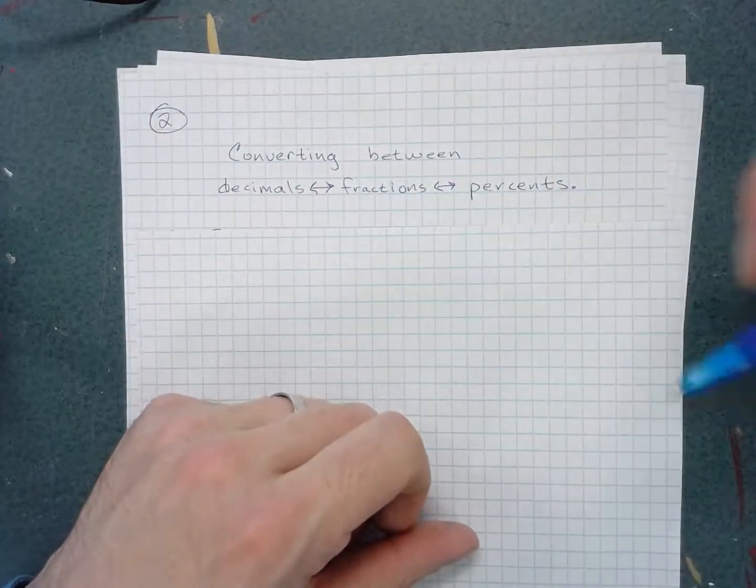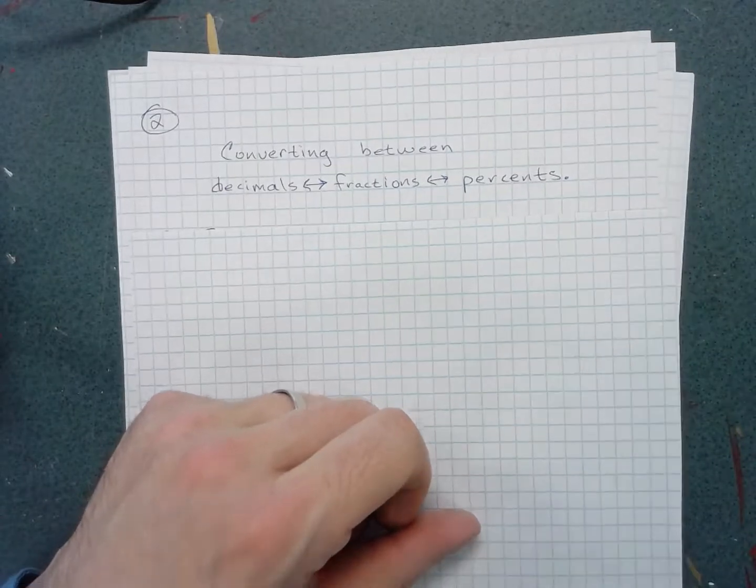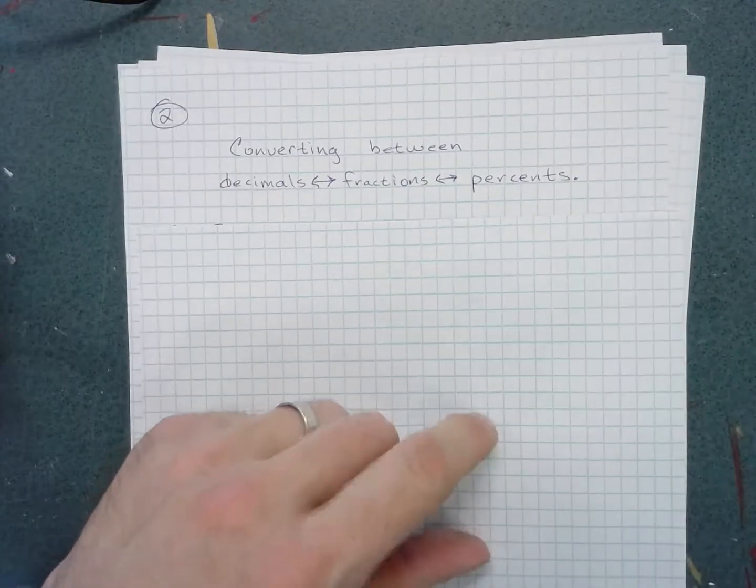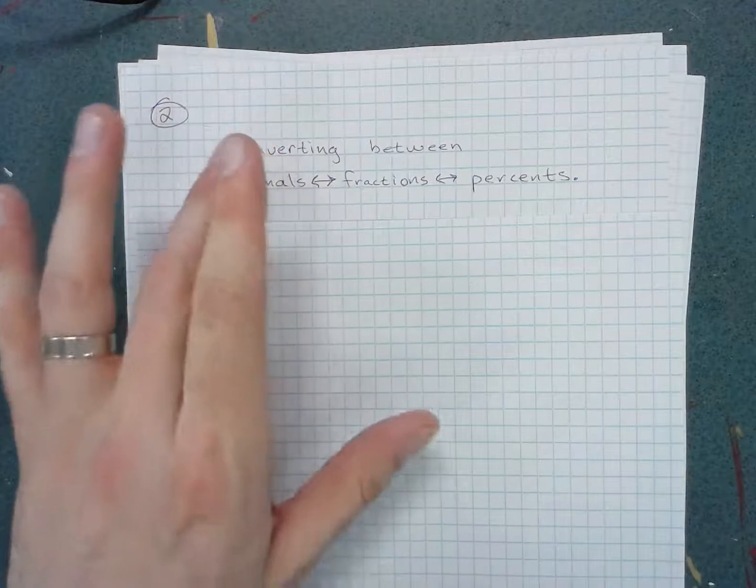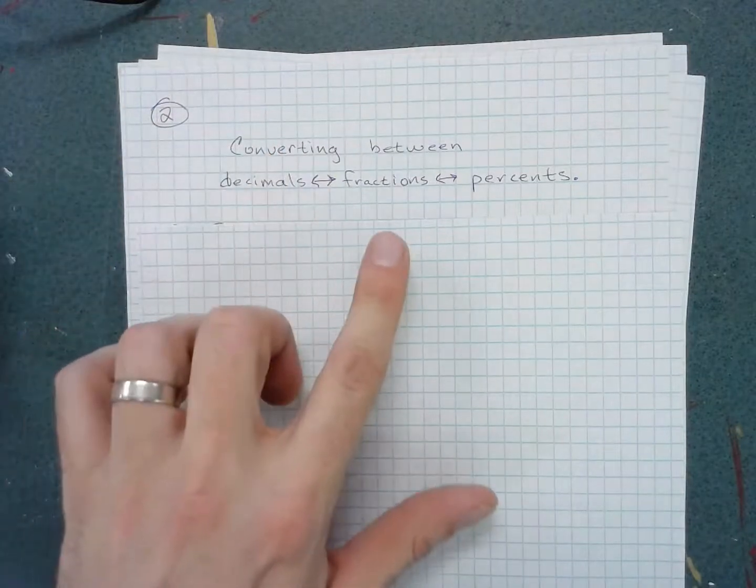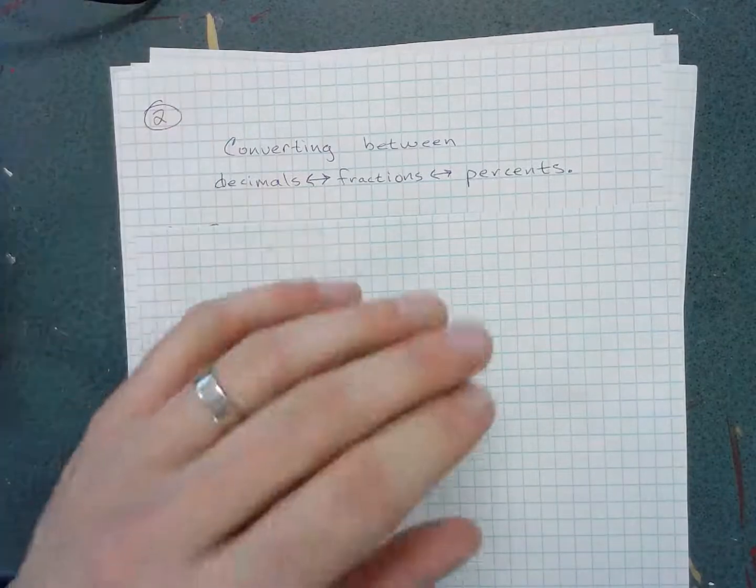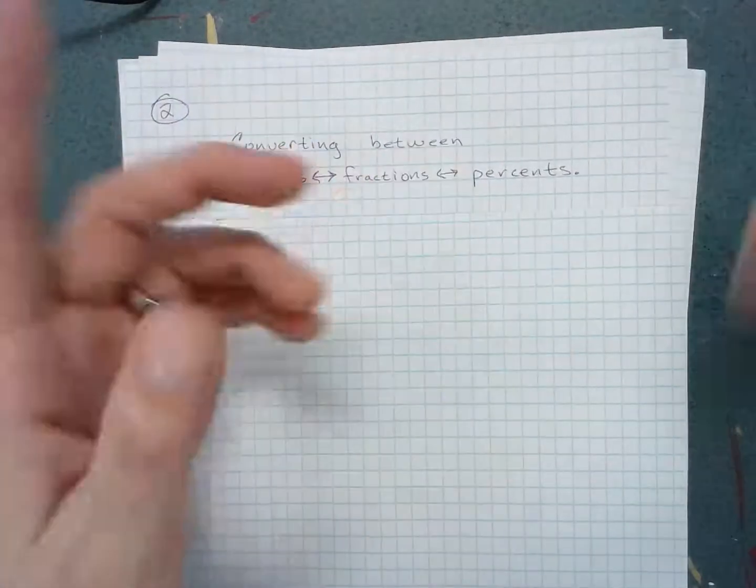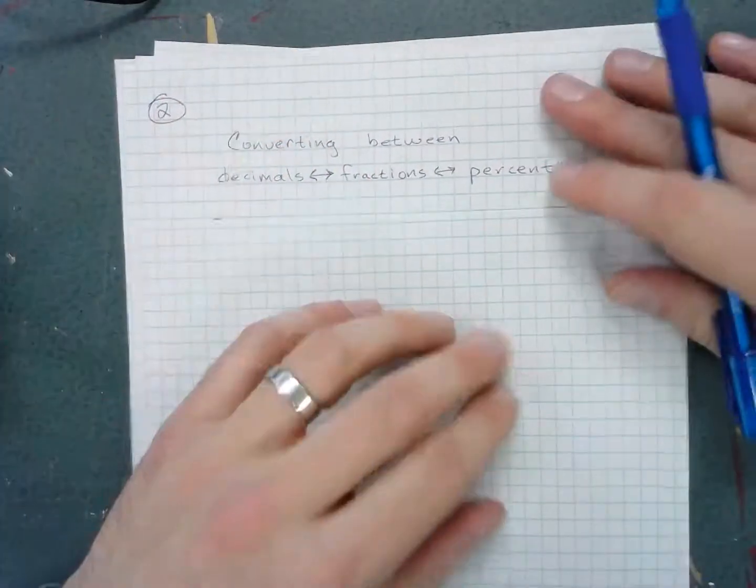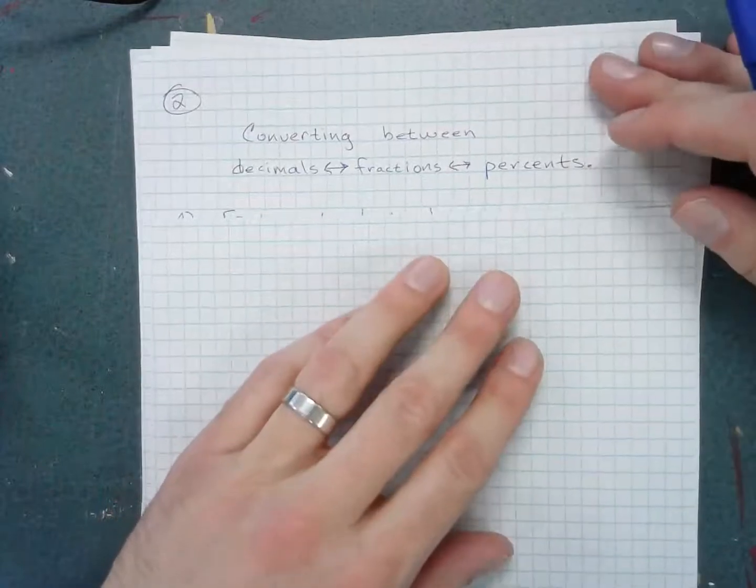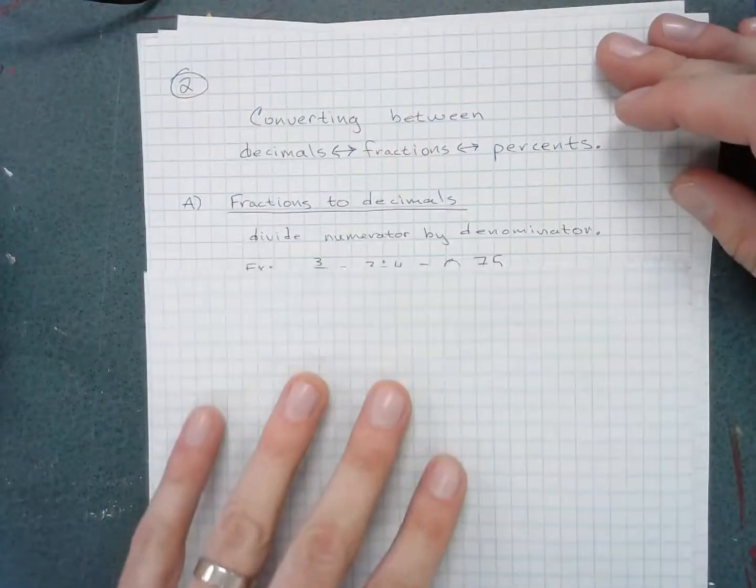Converting between decimals, fractions, and percents. In probability, oftentimes answers can be expressed in any of these forms, so it's pretty useful to know how to interchange back and forth between decimals, fractions, and percents.